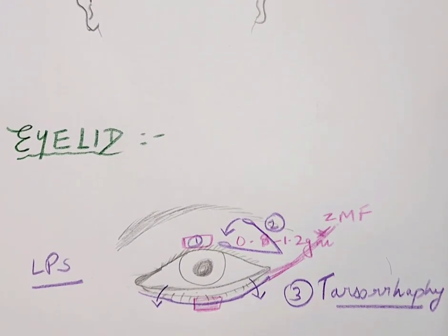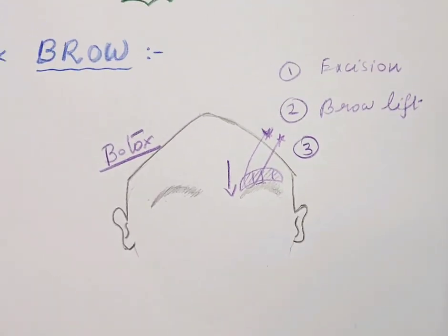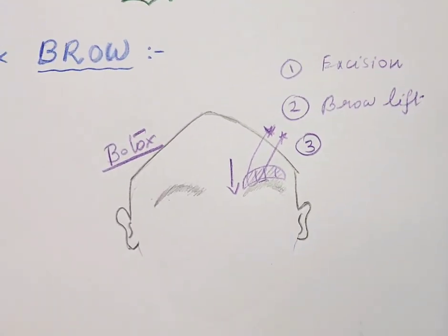Those are the three regions — brow, eyelid, and nose — discussed in this video. In upcoming videos, I will go more in depth and explain the use of temporalis transfer for the upper as well as the lower eyelid.